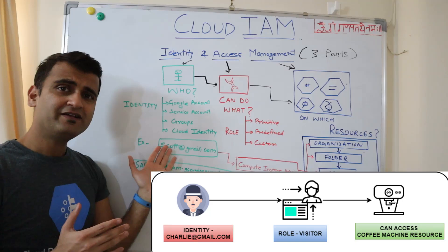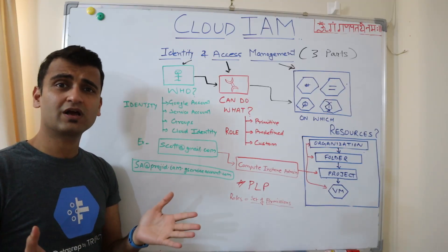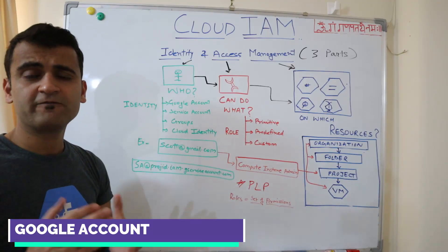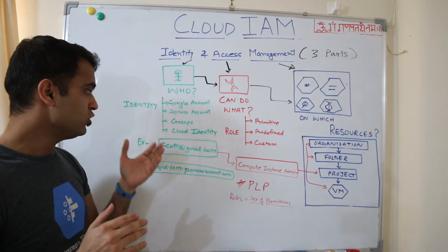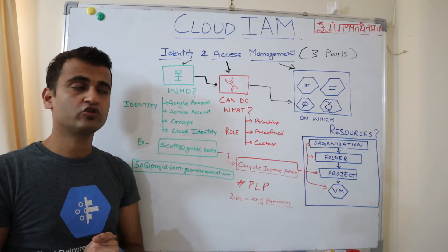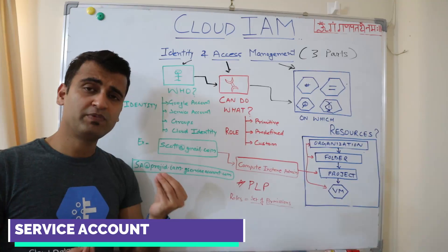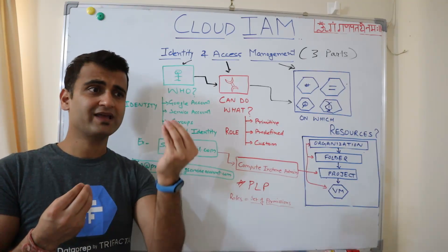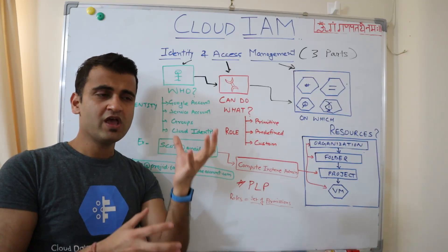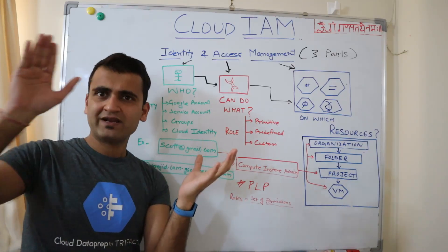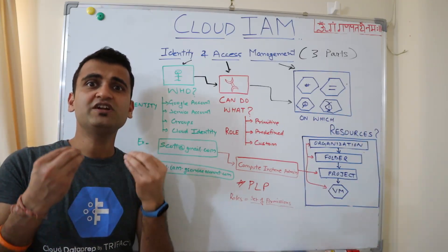When we talk about identity, there are various kinds of identities on Google Cloud. The first and most common is a Google account — for example, when creating free-tier access on Google Cloud Platform through your Gmail account. Secondly, you can have service accounts. Service accounts are not used by people; they are used by resources. Suppose there is a server deployed on Google Cloud that needs to talk to another resource under the hood — that cannot happen through your user ID, and for that you need service accounts.